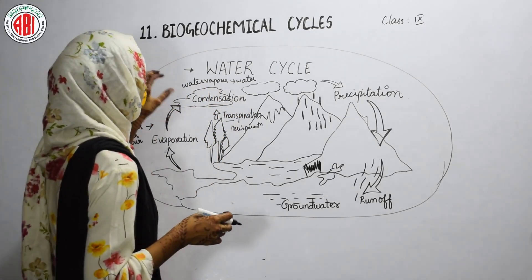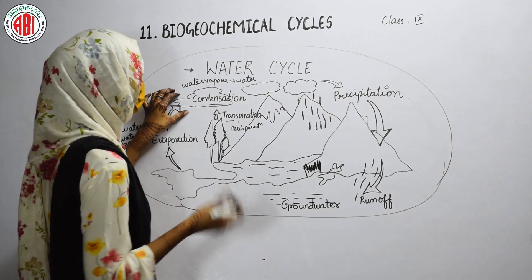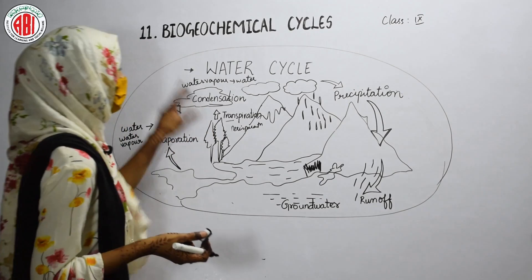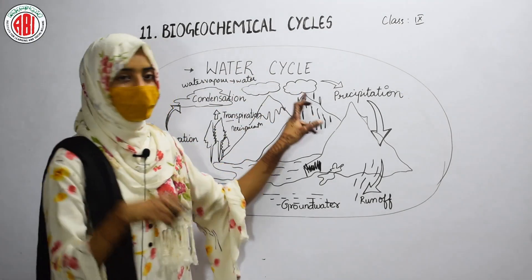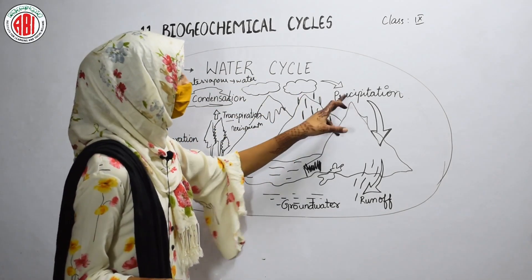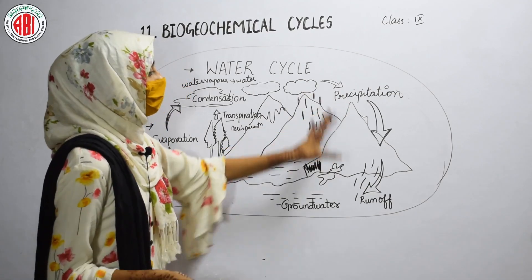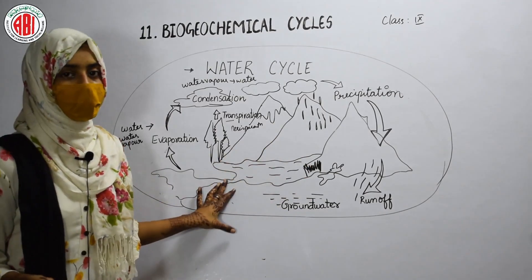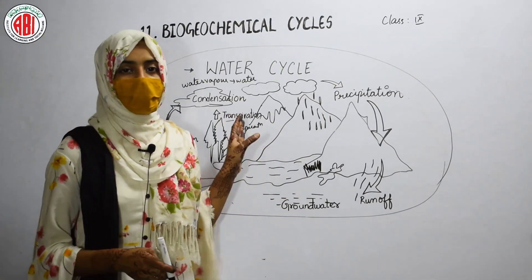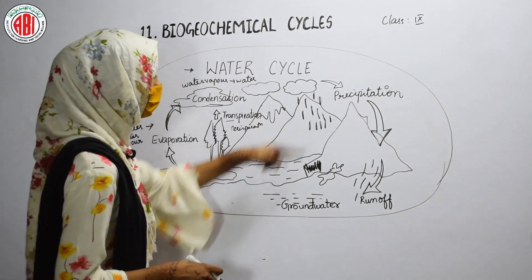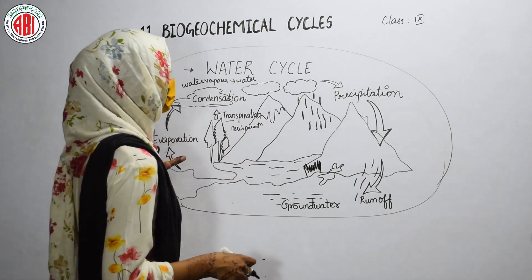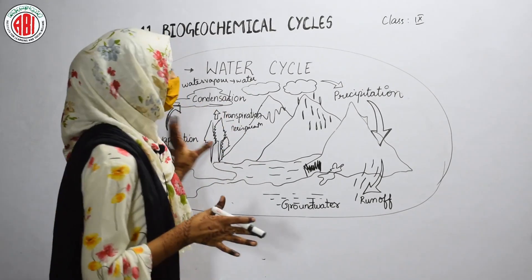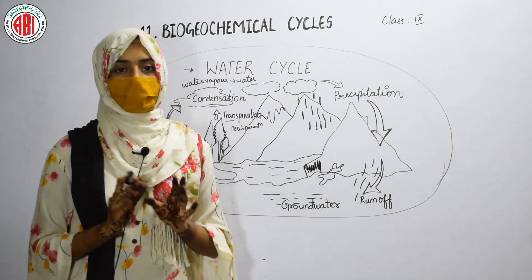After water vapor reaches the atmosphere, it becomes clouds, and when the clouds become cool, the water vapor changes into water — this is condensation. After condensation, the water falls in the form of rain, which we call precipitation. This rain water forms different water bodies and goes back to the atmosphere as water vapor. This cyclic process of water is called the water cycle.